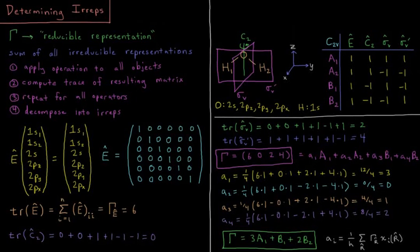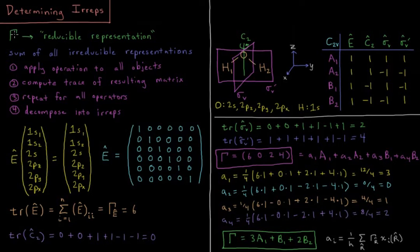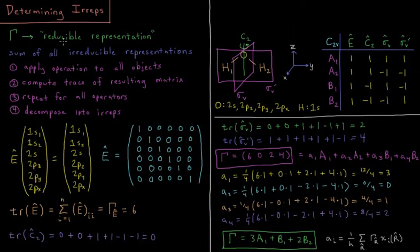This video will discuss how to determine the irreducible representations of a given set of objects in a given point group. We'll start by discussing the quantity capital gamma, which is defined as the reducible representation. Gamma is what is called a reducible representation because it is a sum of different irreducible representations.